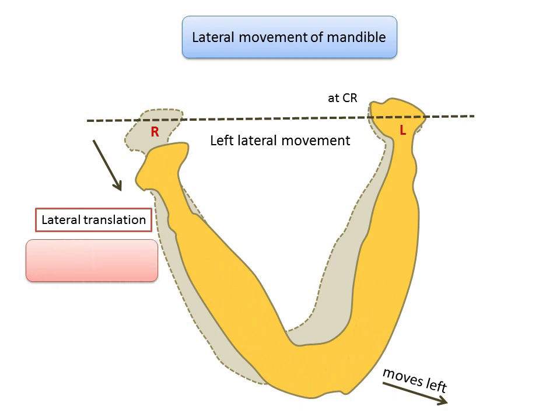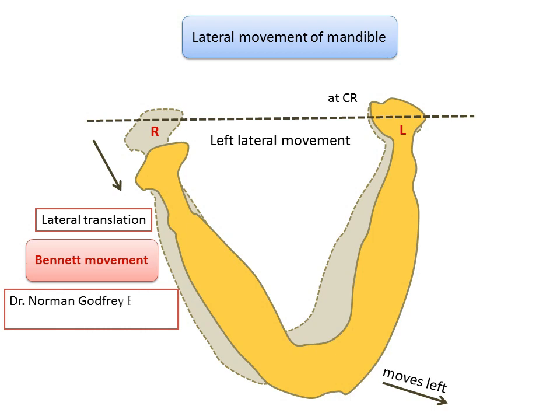This bodily lateral movement — the lateral shift of the mandible resulting from the condyle moving along the lateral inclines of the mandibular fossa during lateral jaw movement — is termed Bennett movement, named after Dr. Norman Godfrey Bennett, who initially studied the working condyle path in 1908. Bennett showed that the working condyle moves outwards and the non-working condyle moves inwards. This is now referred to as lateral trusion.